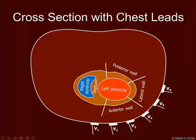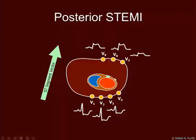Let's assume for the moment we have a posterior wall infarct. The ST segment vector is facing approximately V8, so we see a STEMI in V7, 8, and 9. But it's moving away from V1, 2, and 3, so we see reciprocal depressions in V1, 2, and 3.